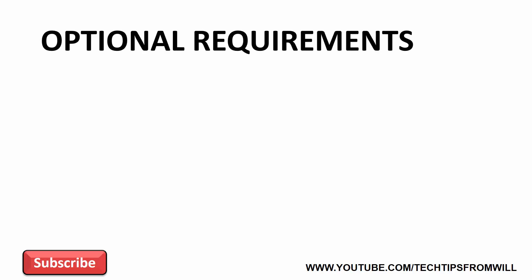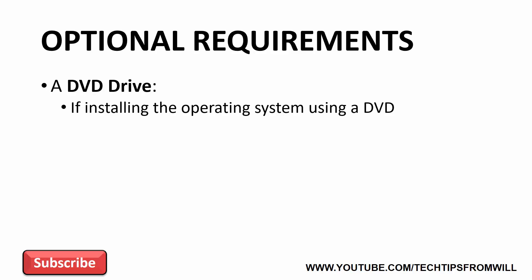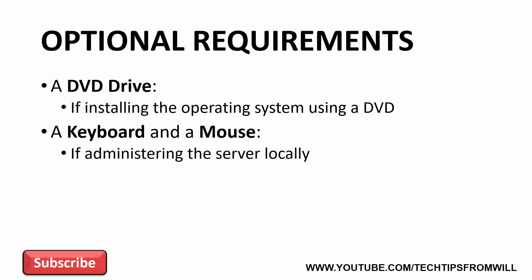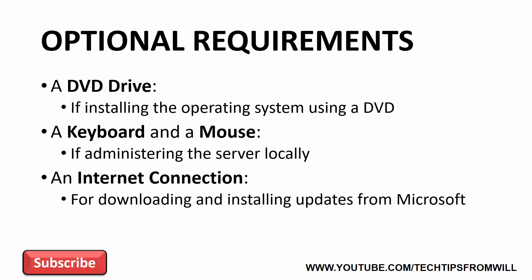Finally, some of the optional requirements you should consider for your Windows Server 2016 server include a DVD drive if you plan to install the operating system using a DVD, a keyboard and a mouse if you plan on administering the server locally, and an Internet connection to allow you to download and install the latest Windows Server 2016 updates from Microsoft.